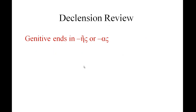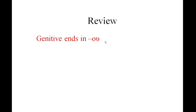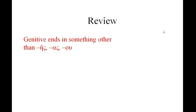So far we've seen genitives ending in eta-sigma, alpha-sigma, or omicron-upsilon. What happens if we have a noun with a genitive ending in something other than these — 'es', 'as', or 'ou'? We're probably looking at third declension.